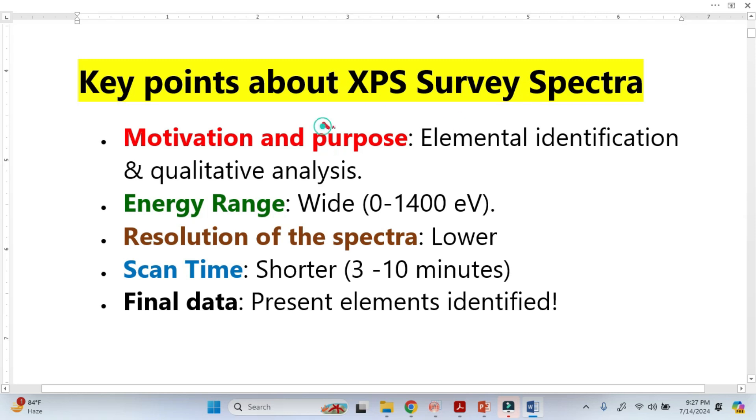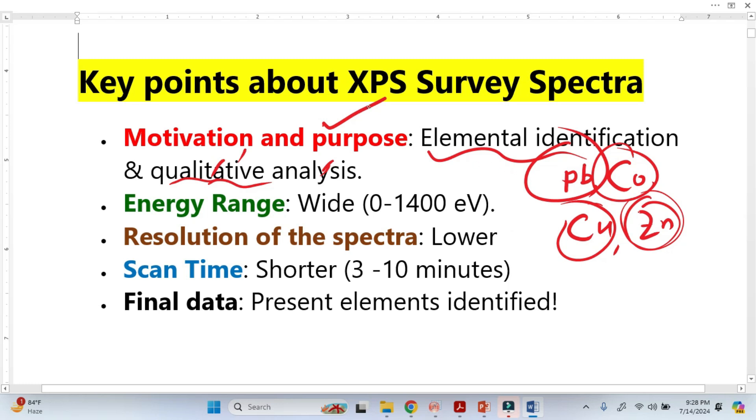These are the key points about XPS survey spectra. The purpose is basically to know the elemental identifications and the qualitative analysis. Qualitative means we are only interested to know the symbol, the symbol means what type of element. Let's suppose this is cobalt here, copper here, and this is basically zinc. We just need to know only the symbols, the elements. This is why we call it qualitative analysis.